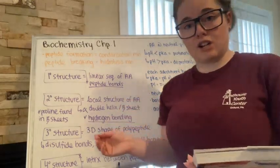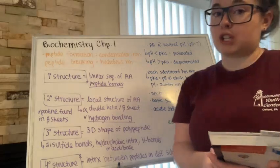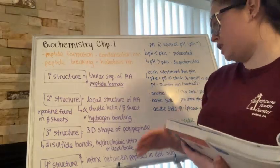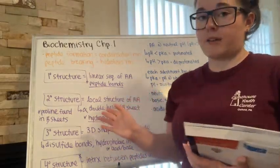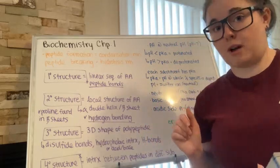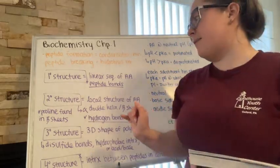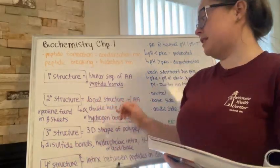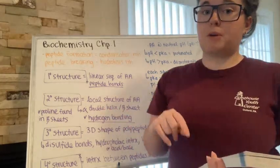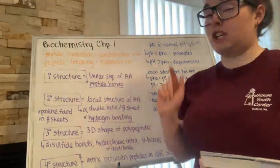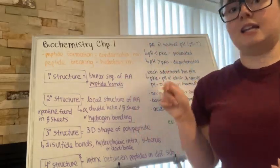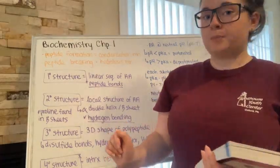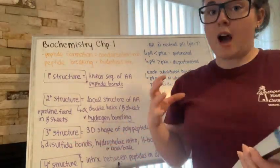We have our secondary structures, which are the local structures of neighboring amino acids — typically our alpha helix or our beta sheets. This level of protein structure is held together by hydrogen bonds. One important thing to note: proline would not likely be found in the alpha helix, but proline would likely be found in a beta sheet due to its structure, helping with the zigzag nature of the beta pleated sheets. Our tertiary structure is the 3D shape of the polypeptide.